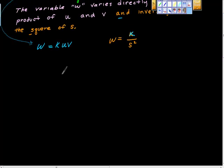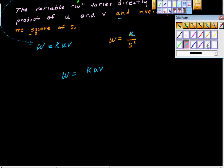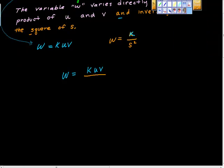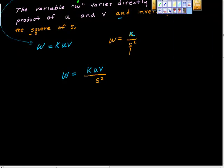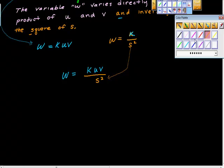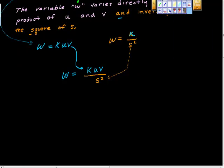I'm going to combine these two and say that w is equal to k times uv, that's the direct proportionality, then over s squared, that's the inverse. All I did was just combine them. This s squared is this one and this is that one. I just put them together to get one equation.